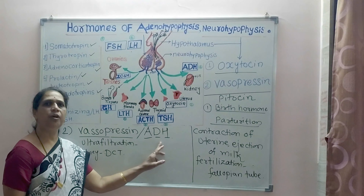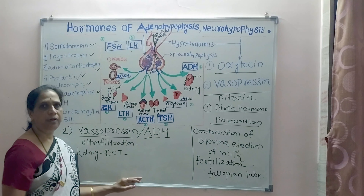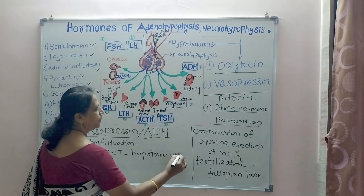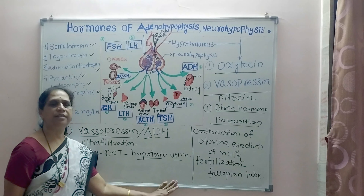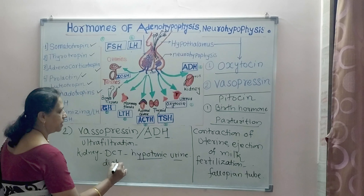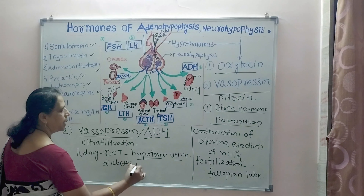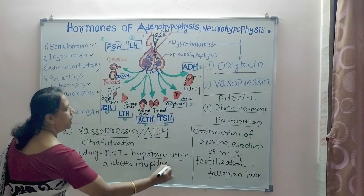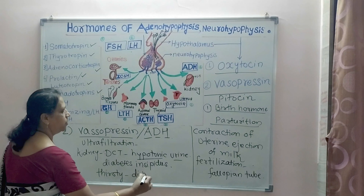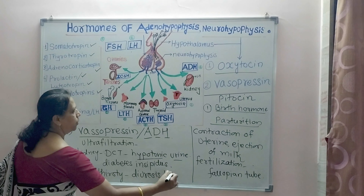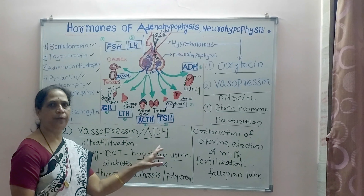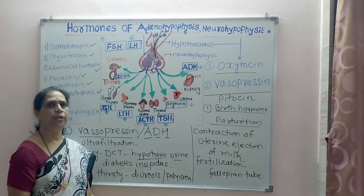If there is a deficiency of ADH, reabsorption of water does not take place, and the body excretes hypotonic urine, causing a disorder called diabetes insipidus, in which the person feels very thirsty. This is also called diuresis or polyuria. Conversely, hypersecretion of ADH causes less formation of urine.